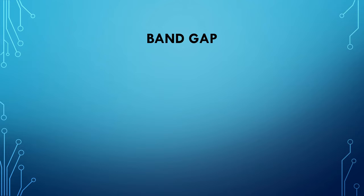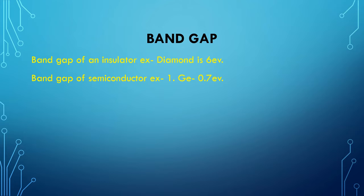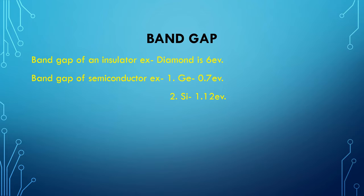Insulators have a larger band gap. For example, diamond is an insulator and its band gap is 6 electron volt. Germanium is a semiconductor material and its band gap is 0.7 electron volt, and silicon is also a semiconductor material and its band gap is 1.12 electron volt. Diamond has a larger band gap while germanium and silicon, being semiconductor materials, have moderate band gaps.